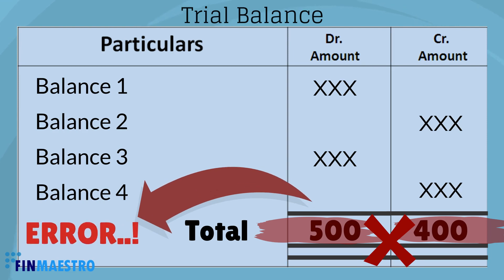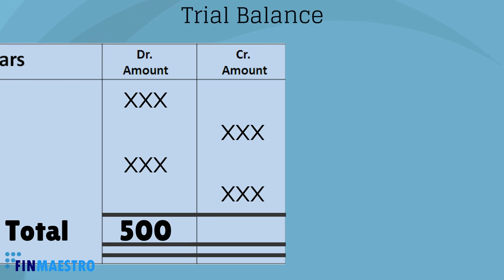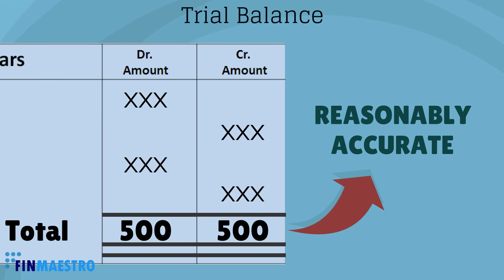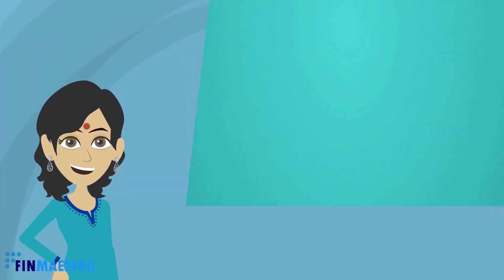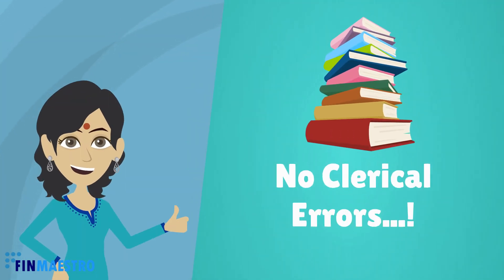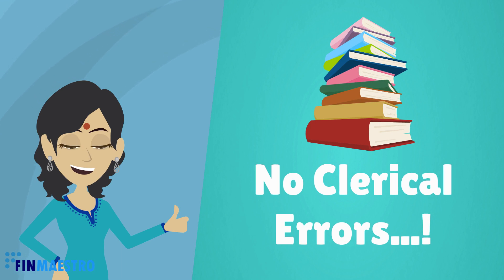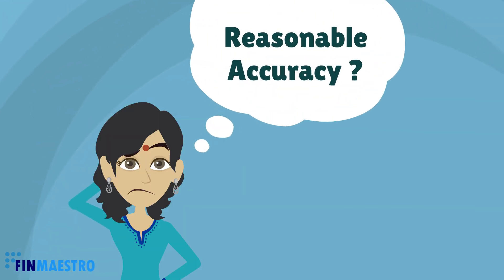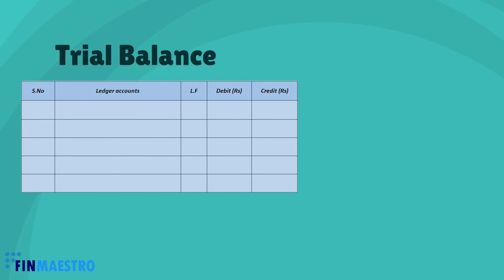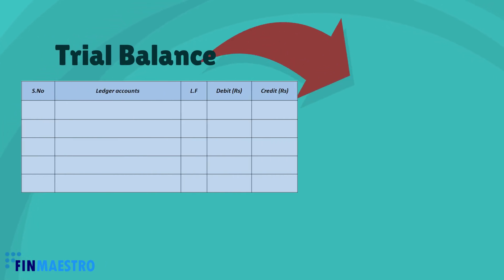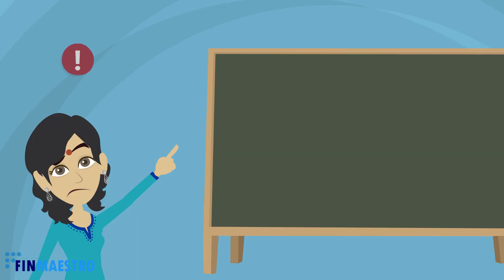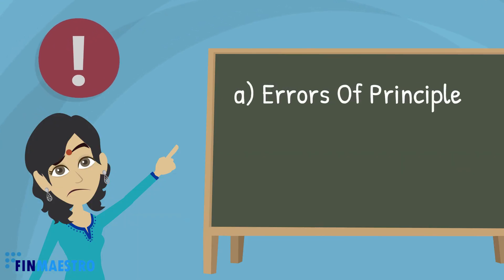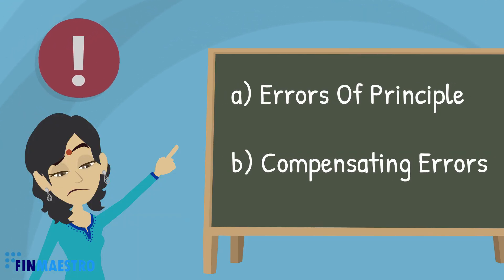then there is an error which we need to inspect. If the total of debits equals the total of credits, it ensures reasonable accuracy of the accounting work and we can be confident that the books are free from clerical errors. The reason I say 'reasonable accuracy' is because trial balance is not proof of 100% accuracy — there can be errors of principle and compensating errors, which we'll learn about later.